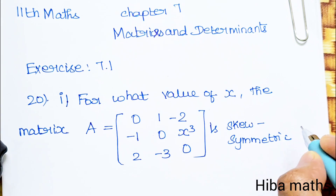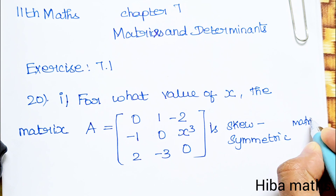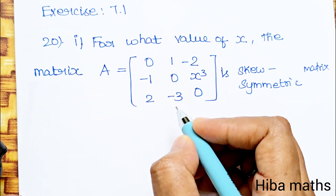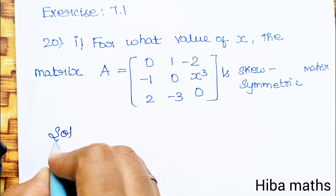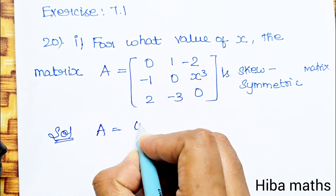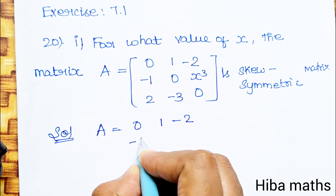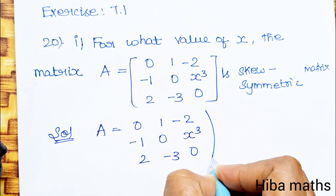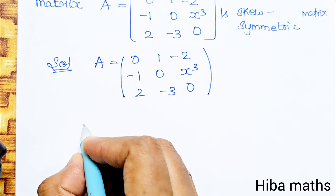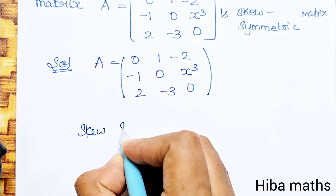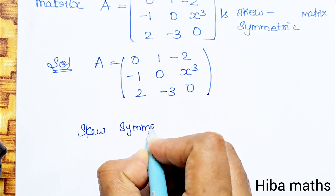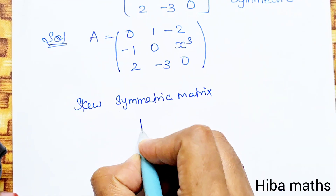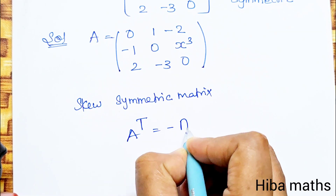A skew-symmetric matrix means A transpose is equal to minus A. So if a matrix is skew-symmetric, A transpose equals minus A. Consider this: A transpose is minus A — this is the skew-symmetric condition.